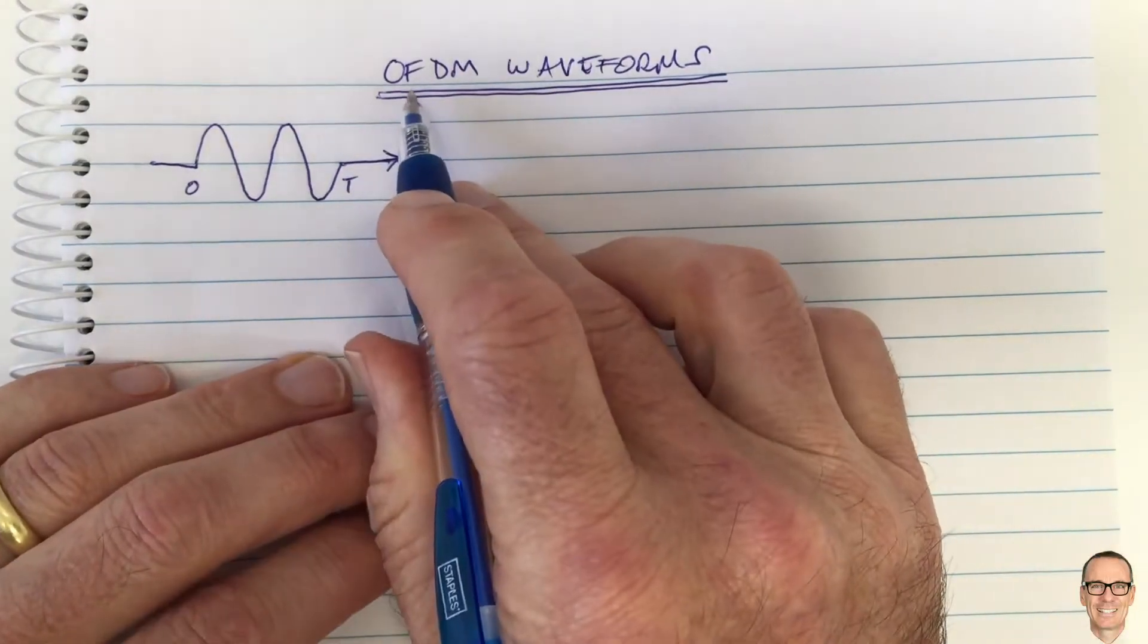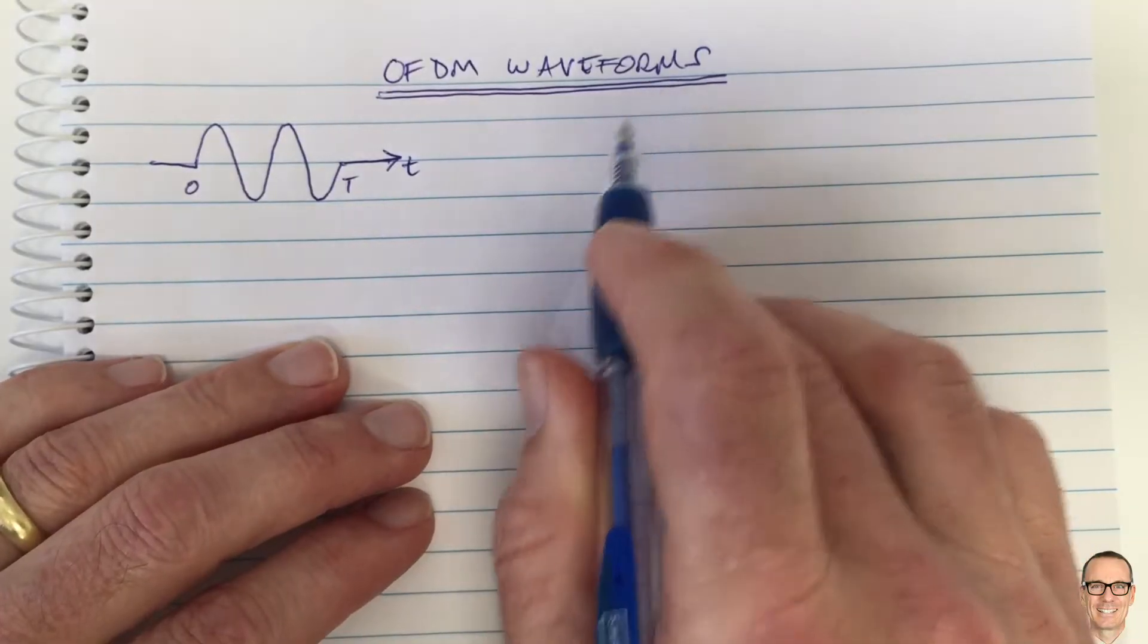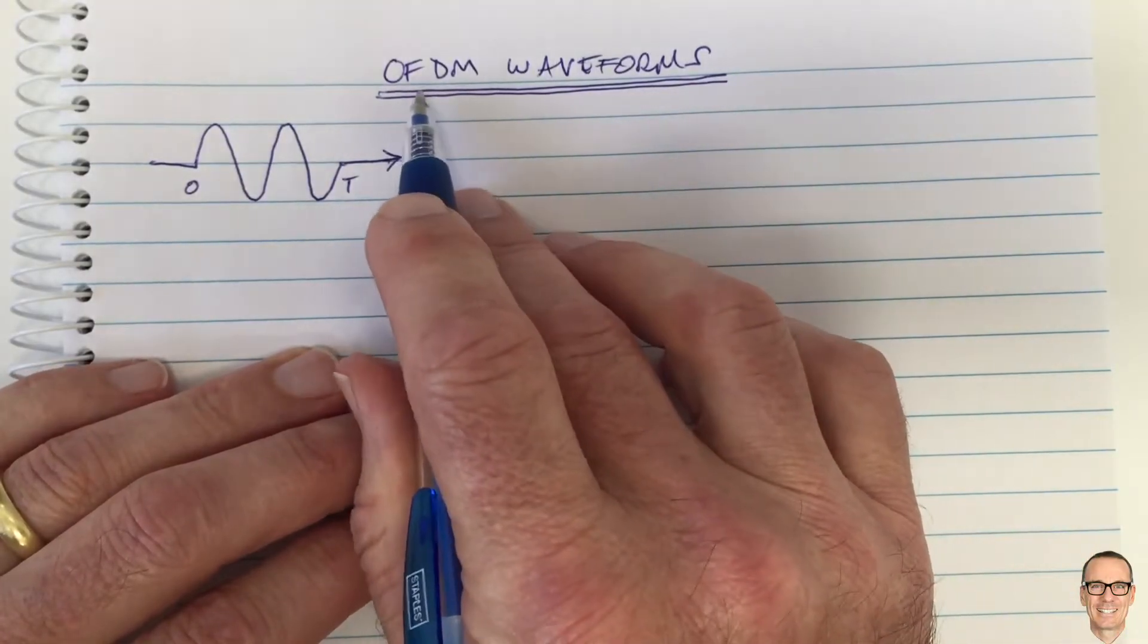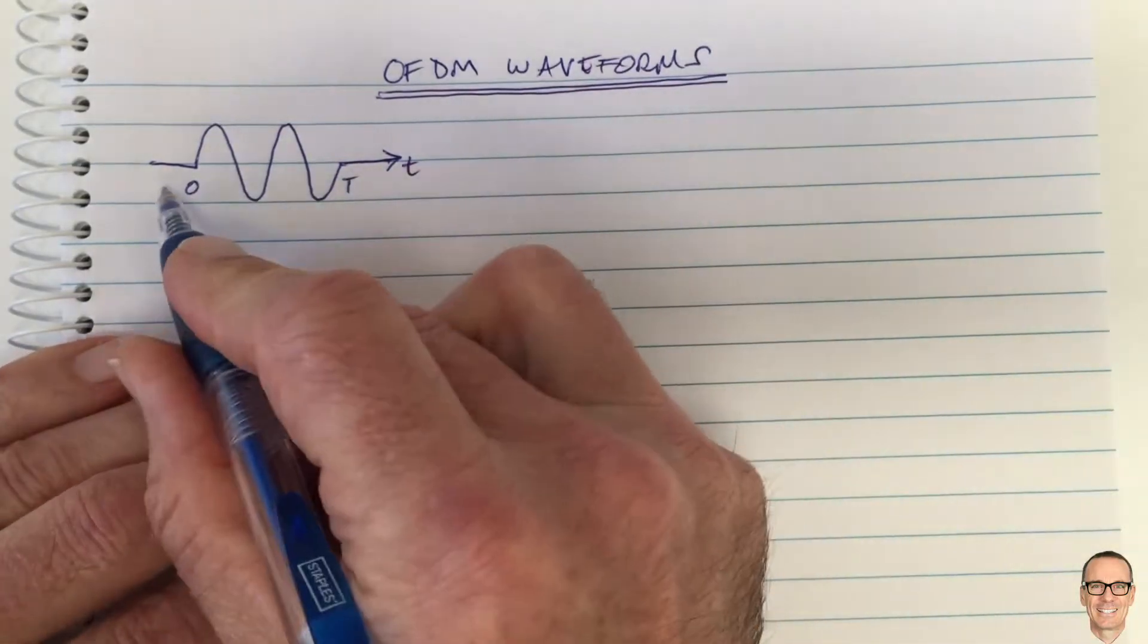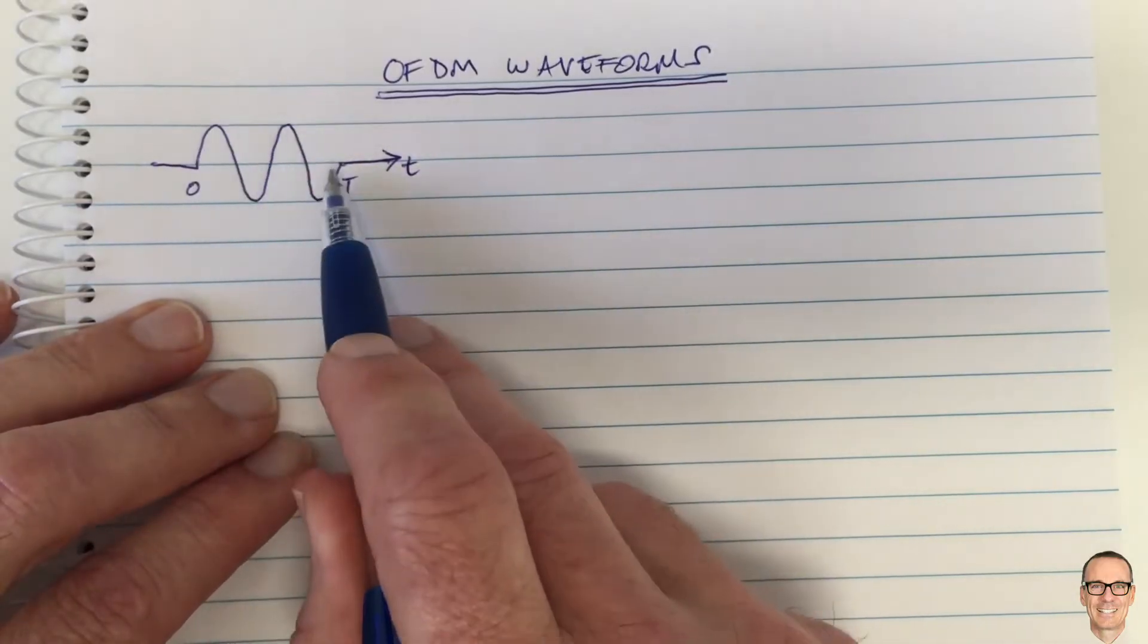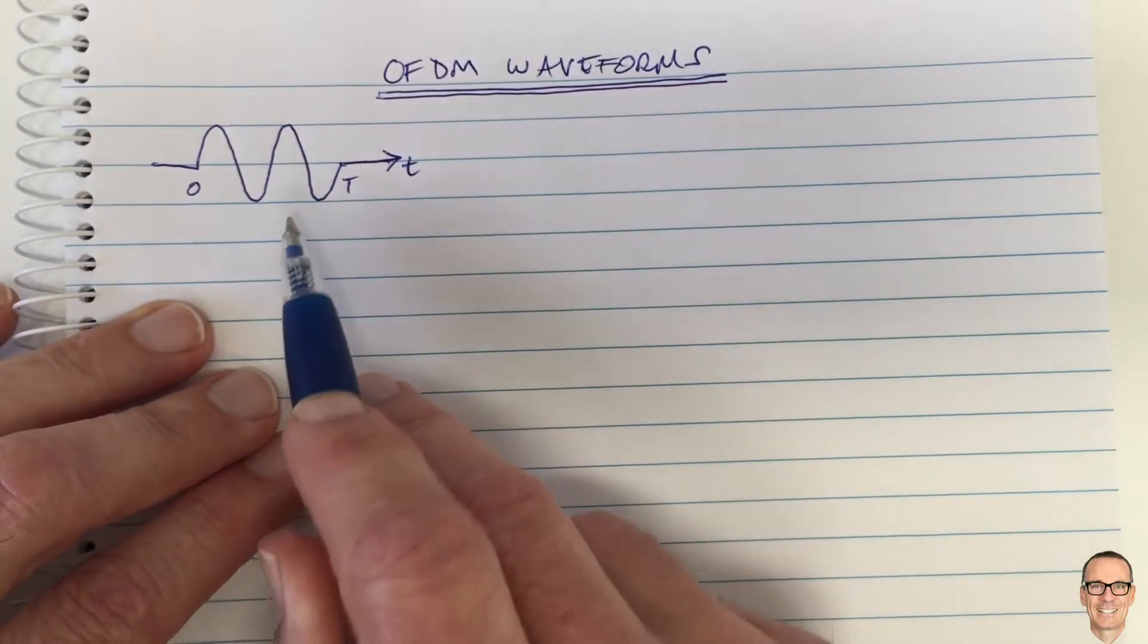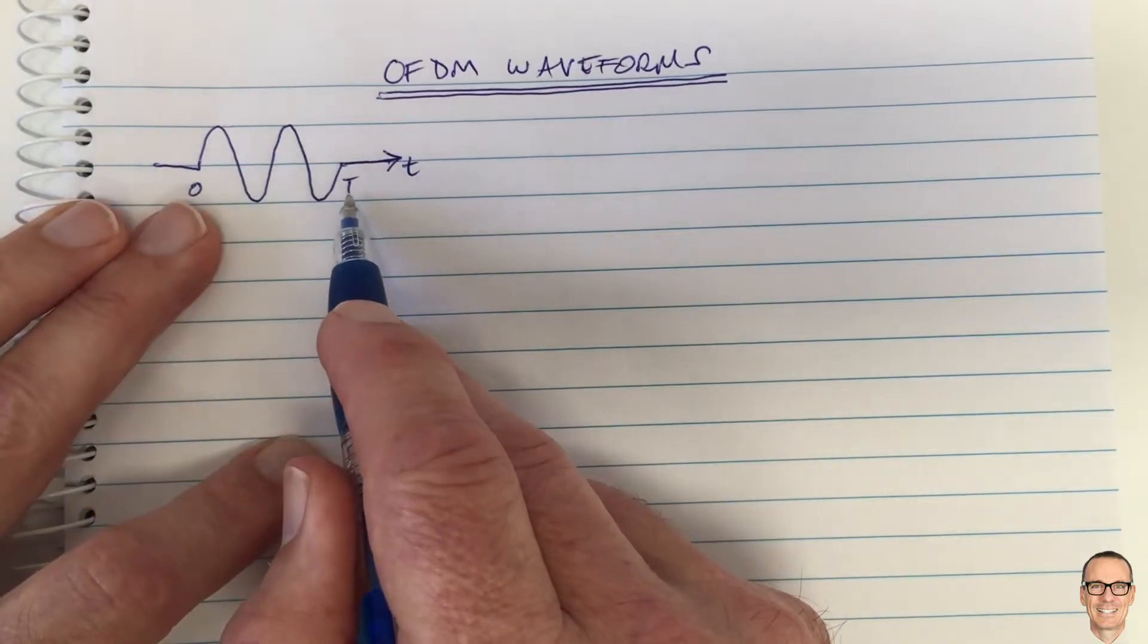Let's look at orthogonal frequency division multiplexing waveforms and understand why they're different from more traditional frequency division multiplexing waveforms. Well here's a digital signal that we would send over a wireless channel. It's got a carrier frequency oscillating at the frequency that the antennas oscillate at and for a period of time between zero and t.